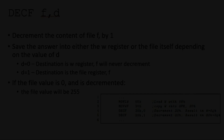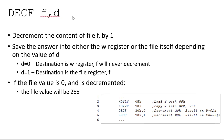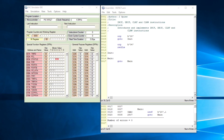The next command we will look at is the decrement file command. It also has two opcodes: a file that you need to specify as well as the destination of the decrement action. The decrement file command will decrement the content of a file by one and the answer will be saved depending on the value of D. If D equals zero the answer is saved in the working register; if D equals one the destination is the file register itself. One thing to note is that if the file is zero and is decremented it will roll back to 255.